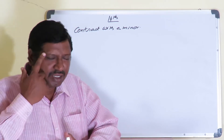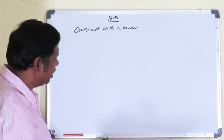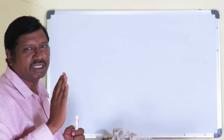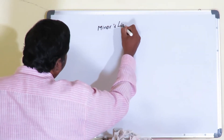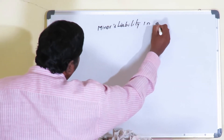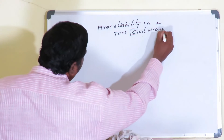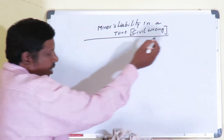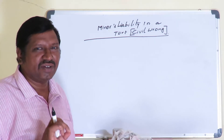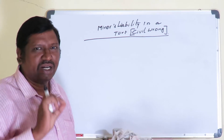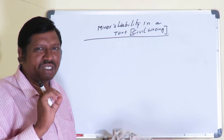Now what we are going to discuss is: what is the liability of a minor in a tort? A tort means a civil wrong. Civil wrong means that in case of a mistake or negligence of the minor, any financial loss is caused to the other party — that amounts to a civil wrong or tort on the part of the minor. Now we have to fix the minor's liability in a tort.